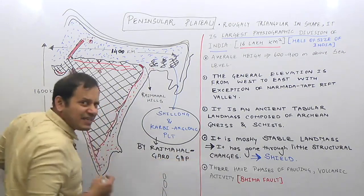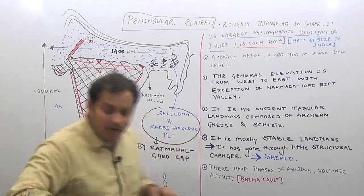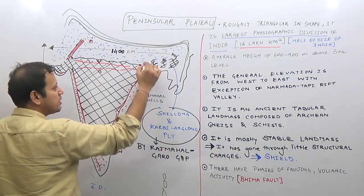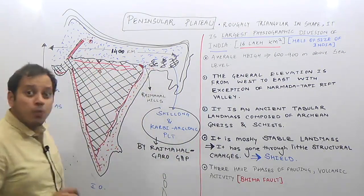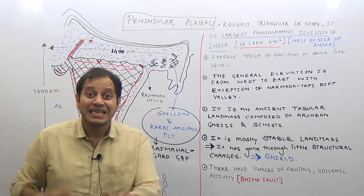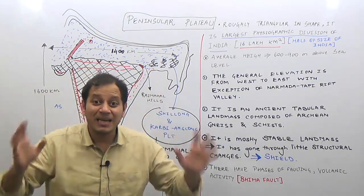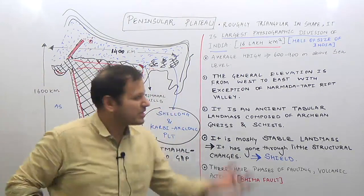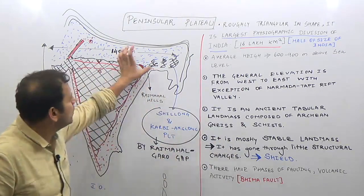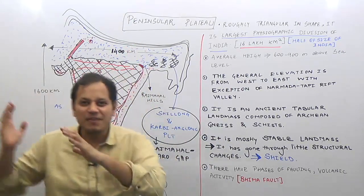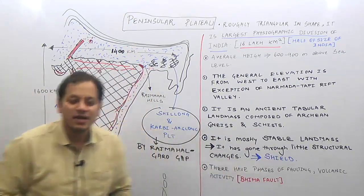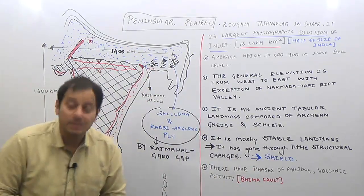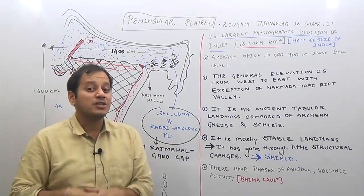In the Rajmahal-Garo Gap, the region is shaded blue on the map because this gap has been filled up by sediments brought down by the Ganga River — it now consists of the lower Ganga plains.